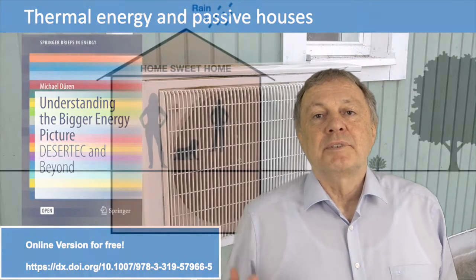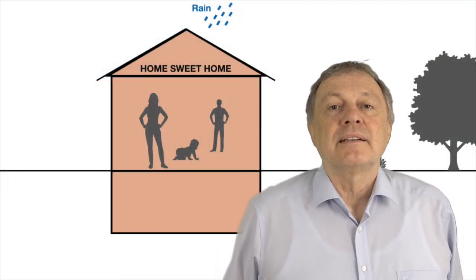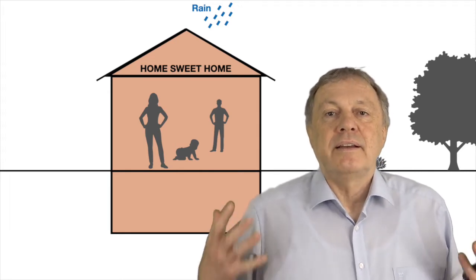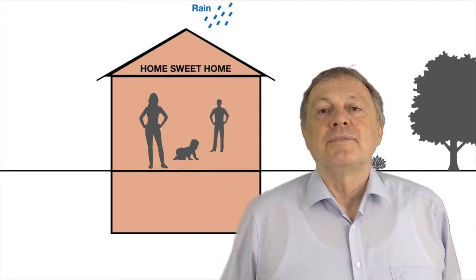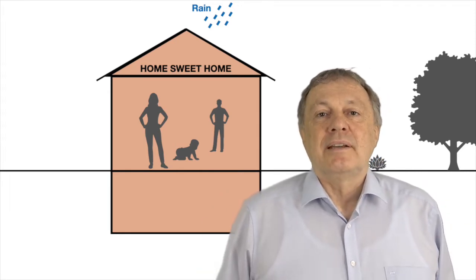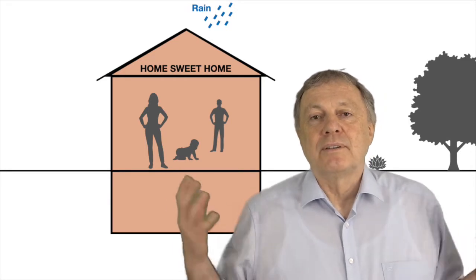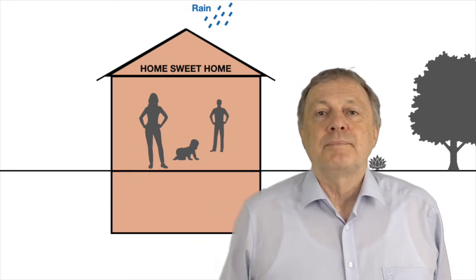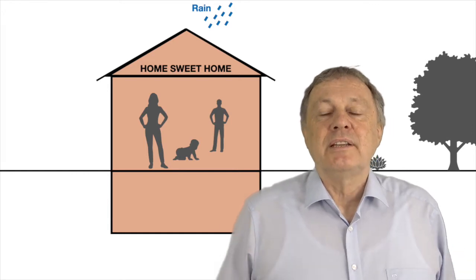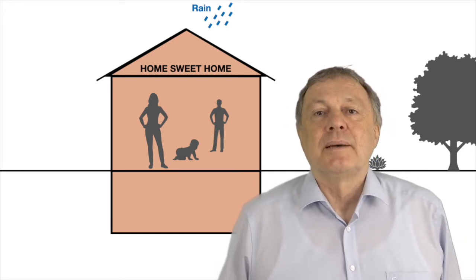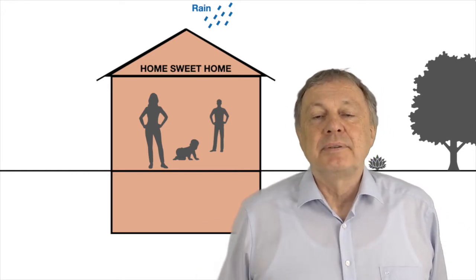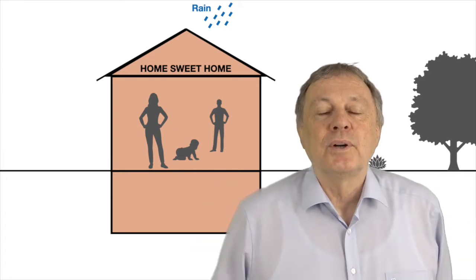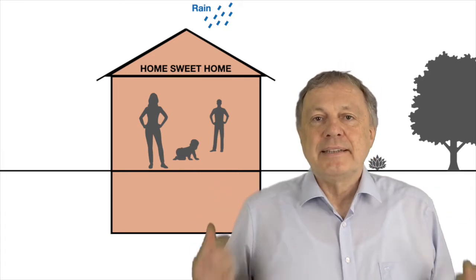I will explain the options for the heat sector using the example of a house, because that is something important for everybody — everybody knows what it means to have a hot or a cold house. So let's go through the possible options for the future heating of a house, starting simple and developing it step by step until we reach what we call a passive house.